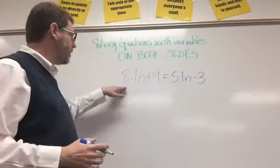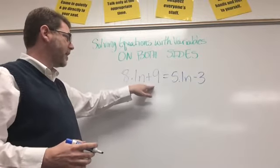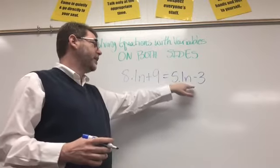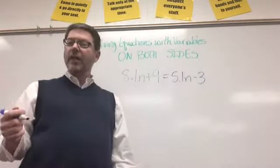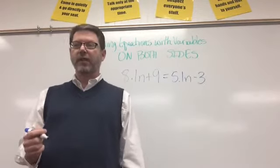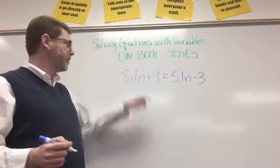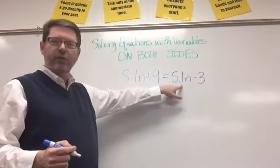For the next problem I have 8.1n plus 9 equals 5.1n minus 3. And again I want to start with my smallest variable. And in this case the smallest variable would be 5.1n.